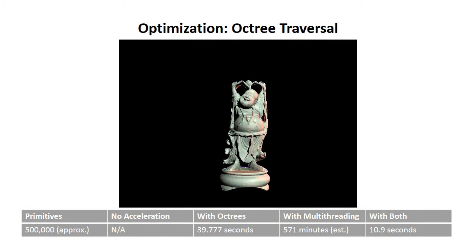This is a much more complicated scene. It contains around 500,000 triangles, and it pretty clearly shows that octrees can have a really positive impact when they're used in the right context. Here, as you can see, with only multithreading, it would have taken us roughly 10 hours just to render this one scene, but with octrees and multithreading enabled, it only took around 11 seconds.